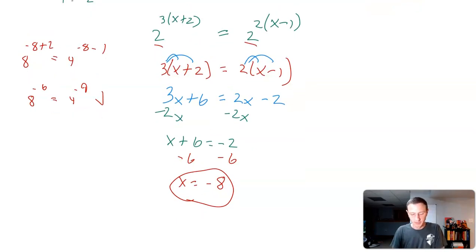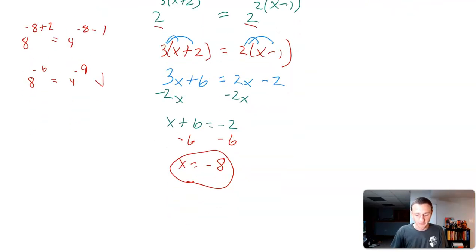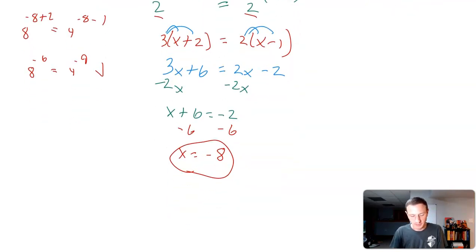2 to the 3rd, 2 to the 2nd, and then solve because we got the same bases. So solving exponential equations when those bases are able to modify and create something equal. There's our answer: x equals negative 8.